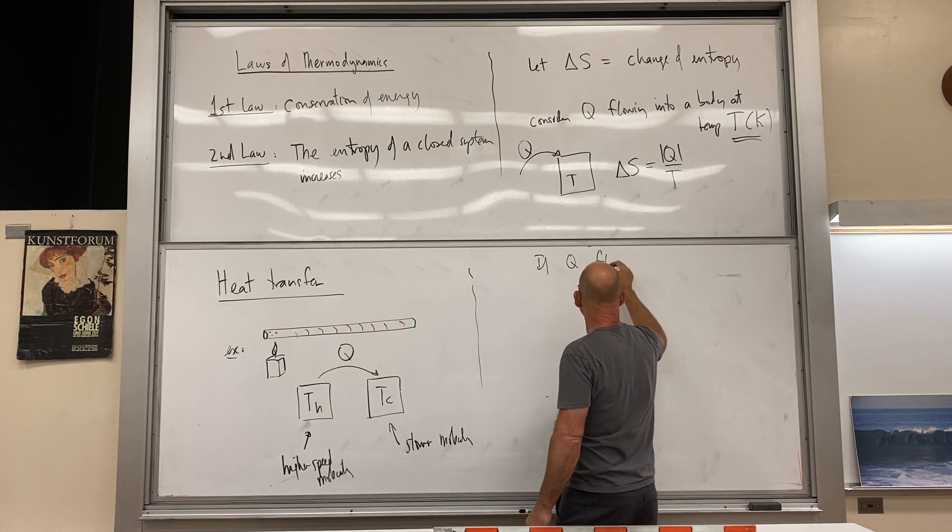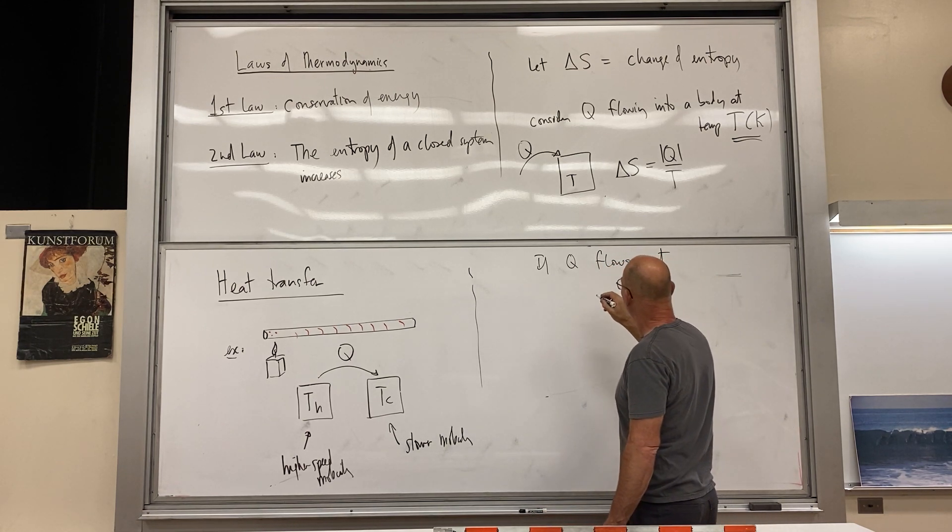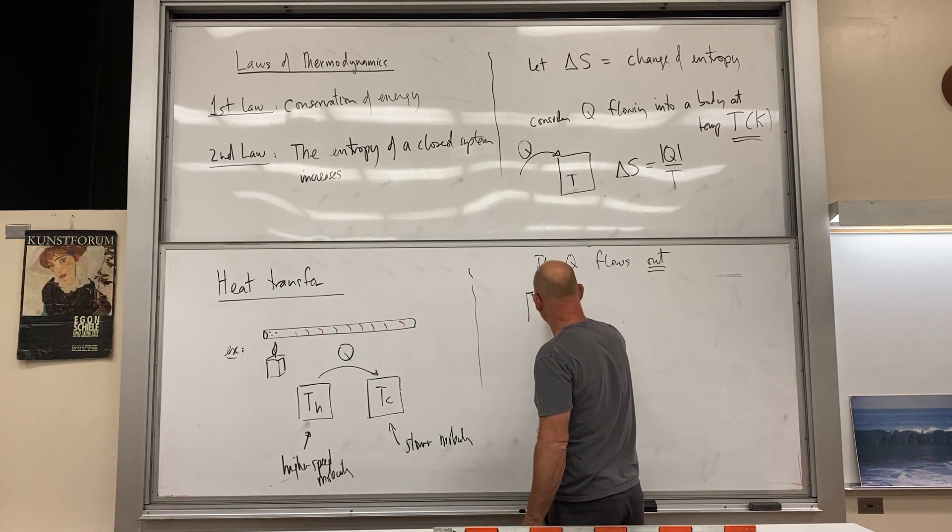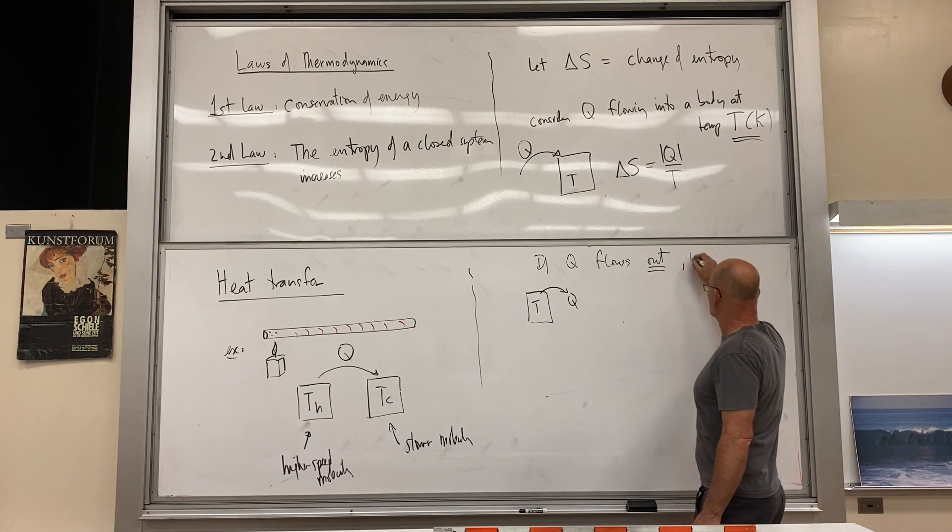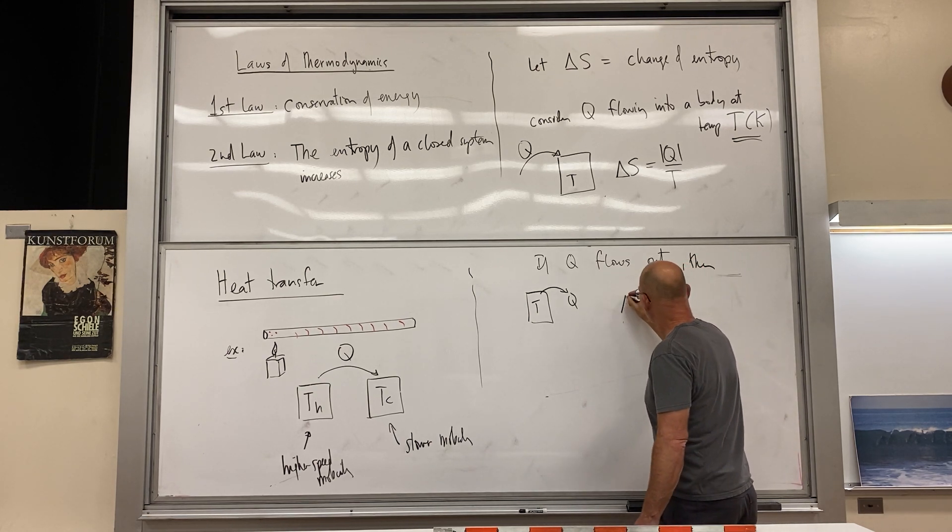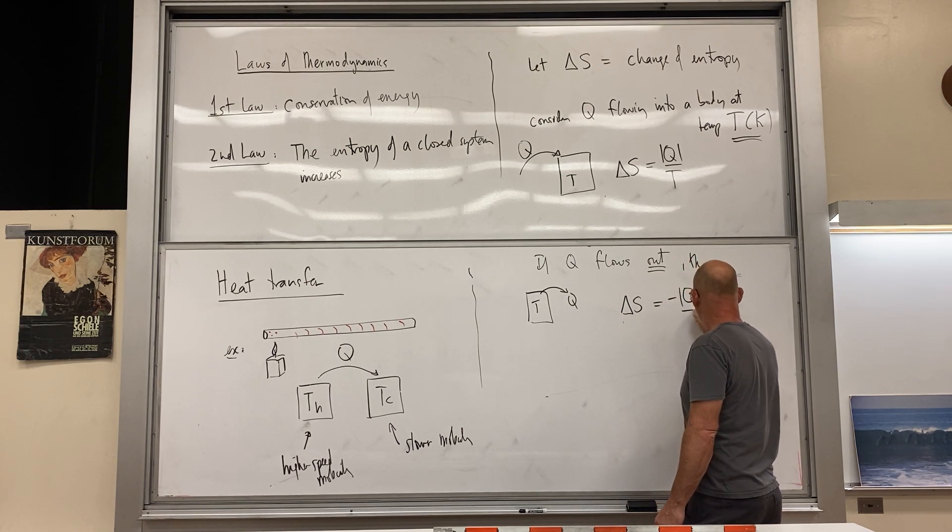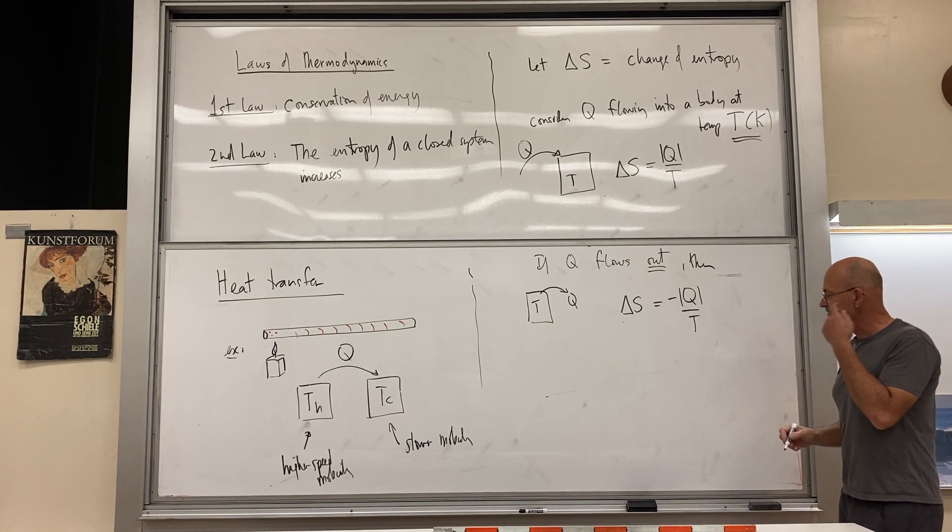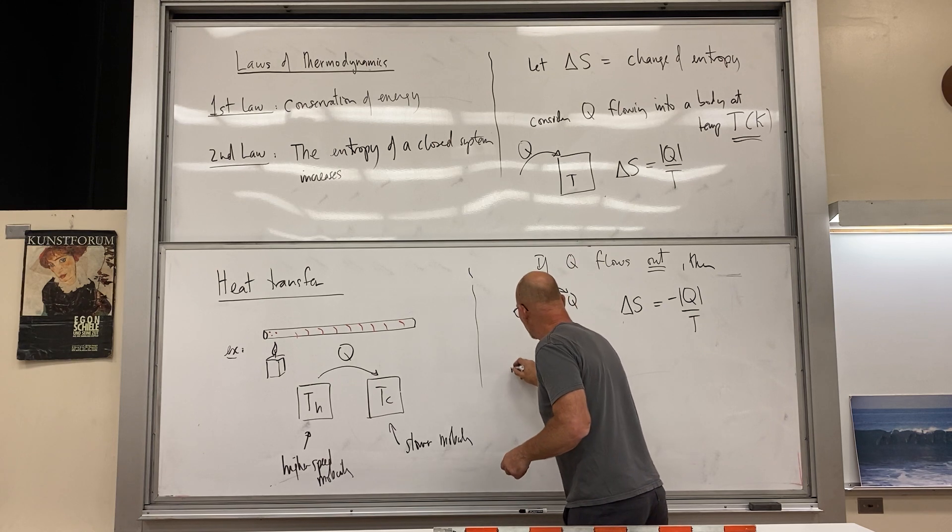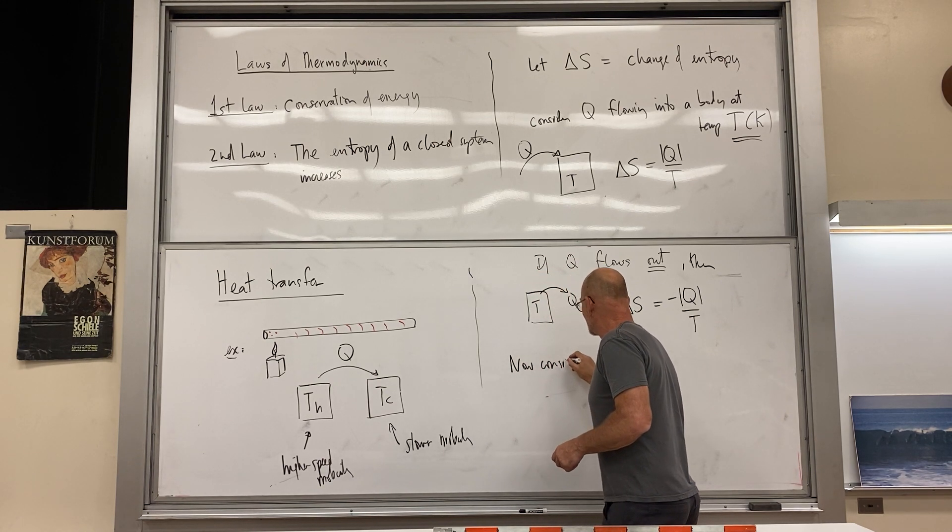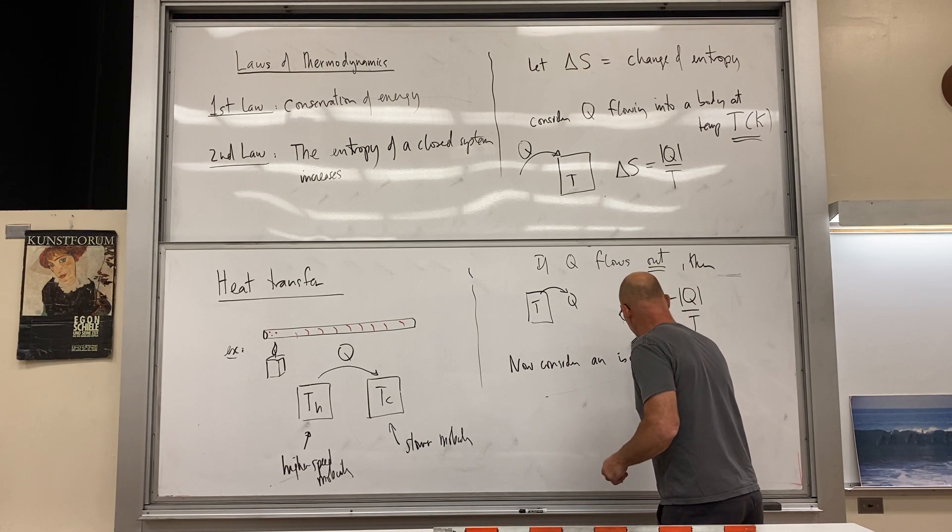So what we're next going to look at is thermal energy flowing out of a body. If Q flows out of a body, so then our cartoon is that the Q is, the heat is leaving, then delta S is equal to minus Q divided by T.